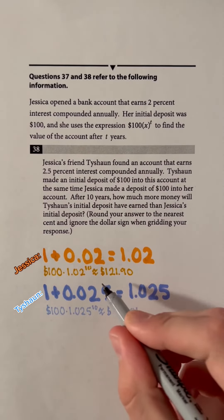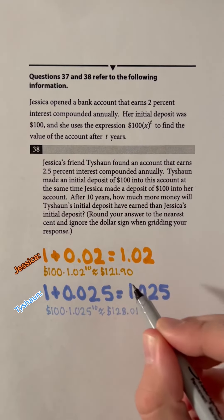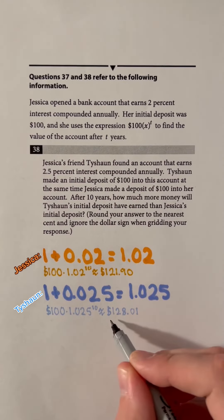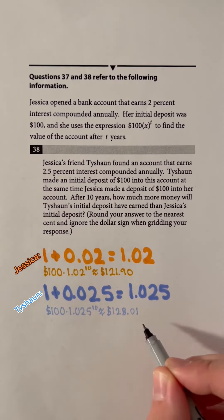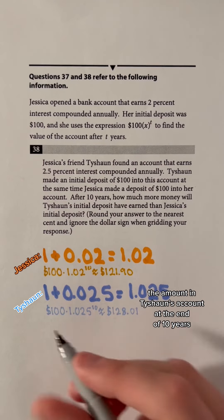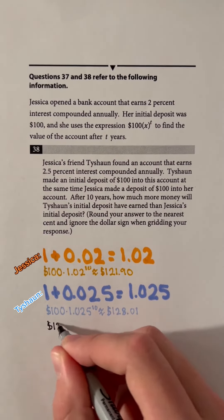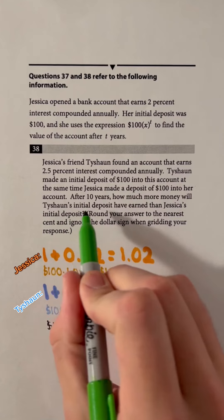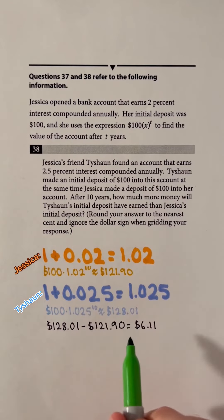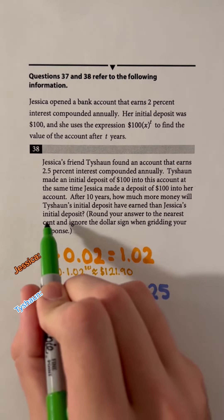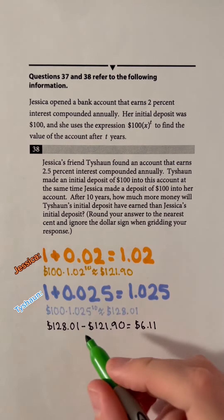If we subtract $121.90, the amount in Jessica's account at the end of 10 years, from $128.01, the amount in Tishan's account at the end of 10 years, we will get $6.11. So Tishan's initial deposit earned $6.11 more than Jessica's initial deposit. Therefore, $6.11 is the correct answer.